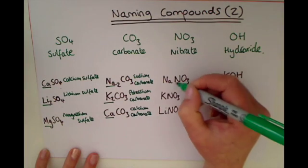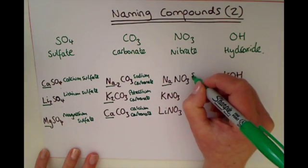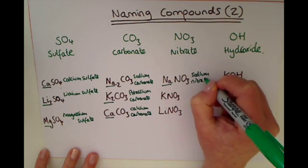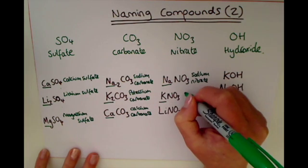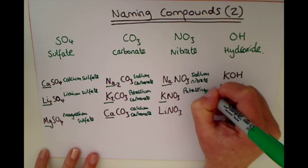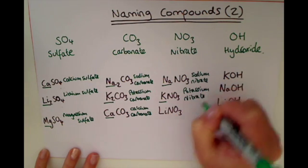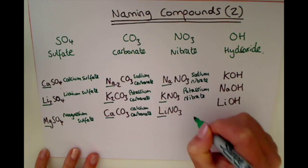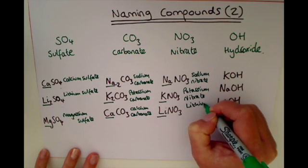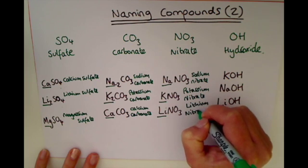Moving on to our nitrates: Na gives us sodium nitrate. K2CO3 — that's potassium nitrate. And LiNO3 — that would be lithium nitrate.